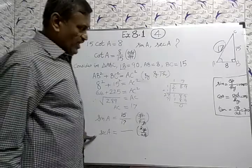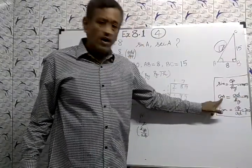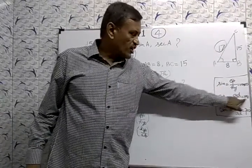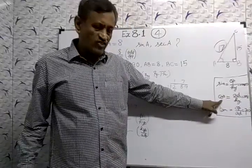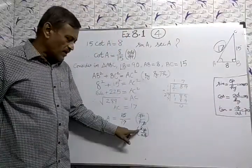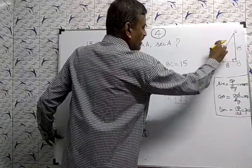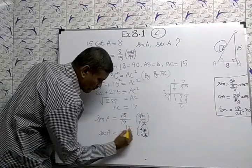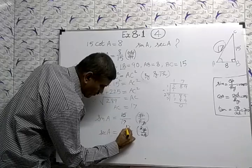Then sec A. Sec is the reciprocal of cos. Cos is adjacent by hypotenuse, sec is hypotenuse by adjacent, upside down of cos. What is hypotenuse? 17. Adjacent is 8. So sec A equals 17 by 8.